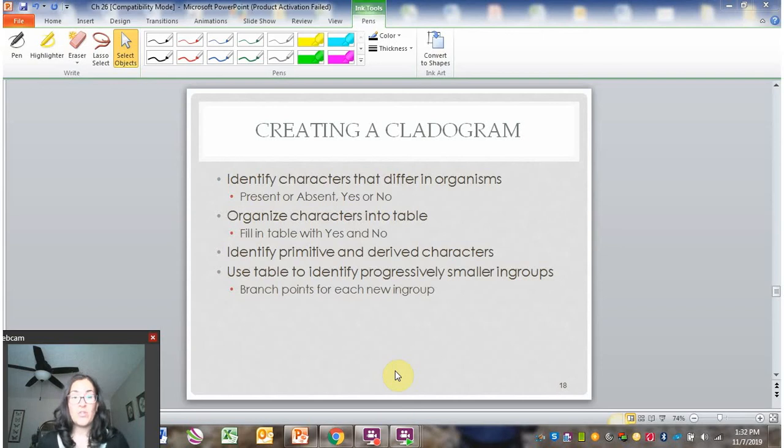Once you have traits that you can express that way as yes or no or present or absent, then you can organize that into a table. The table's purpose is to help you see patterns. You want to identify groups that have yeses and no's in the same kind of organization. So the table's helping you see patterns.